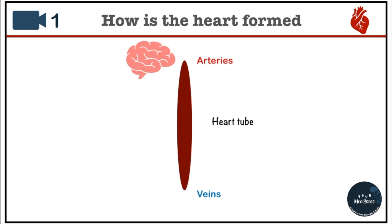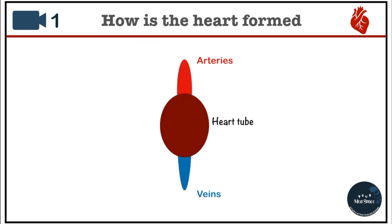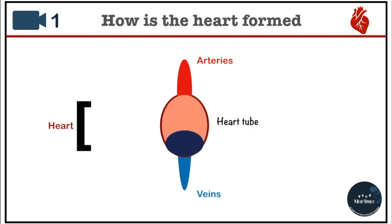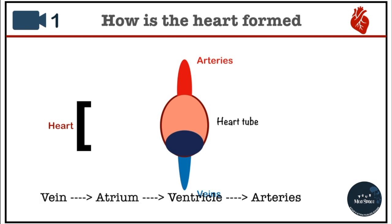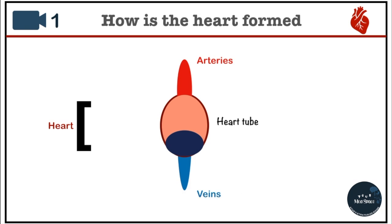Soon the heart tube will start changing its shape. The middle part of this tube will start bulging, and this bulged portion is going to give rise to the future heart. In the heart, veins empty blood into the atrium and from there blood moves into the ventricles, and ultimately blood from the ventricles moves into the arteries. So this blue portion is going to be our future atria and the pink one is going to be the future ventricles.